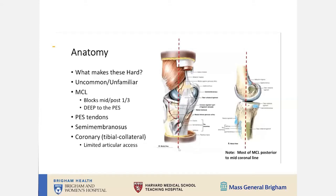The medial side of the proximal tibia is sometimes a little unfamiliar because we don't go there very often. The incidence of Schatzker 4 and 6 fractures is not very high. As long as you keep your incisions and dissection in the sagittal plane in line with the structures, you are fairly safe. I look at the fracture and decide whether it is anterior or posterior to the MCL, then decide on the approach.